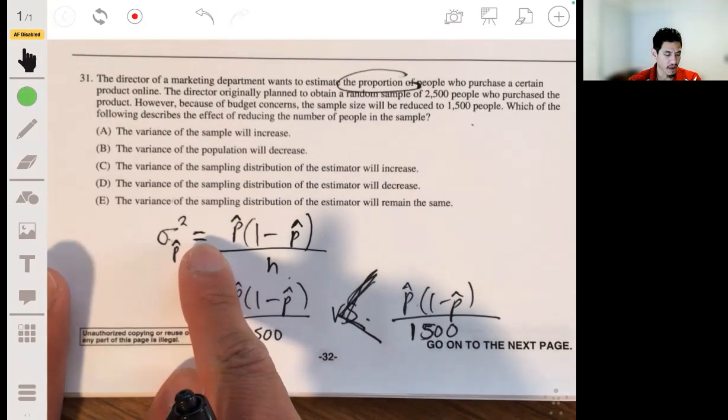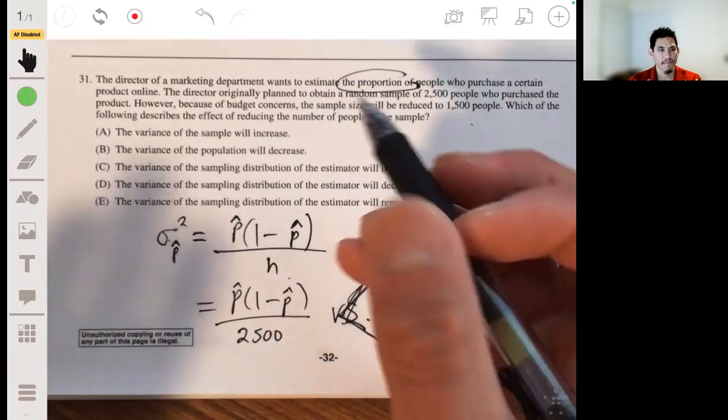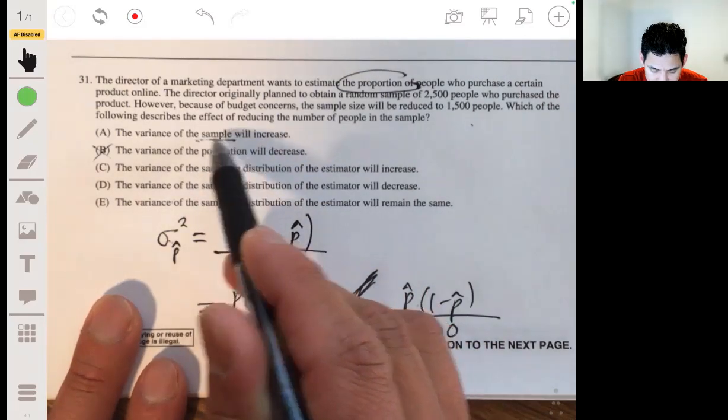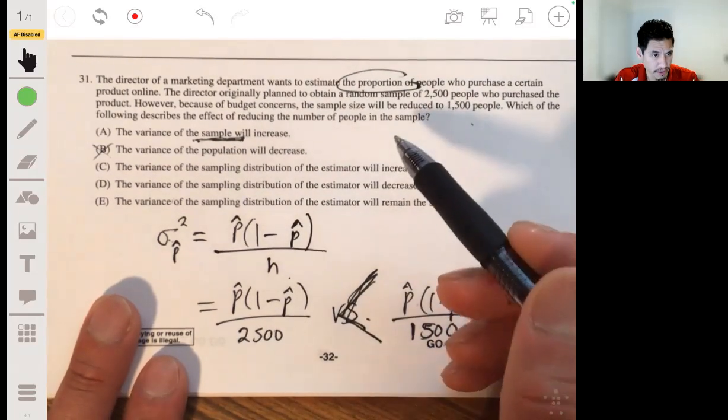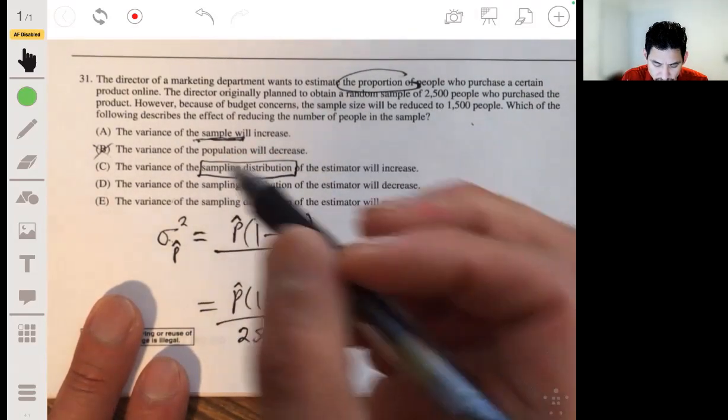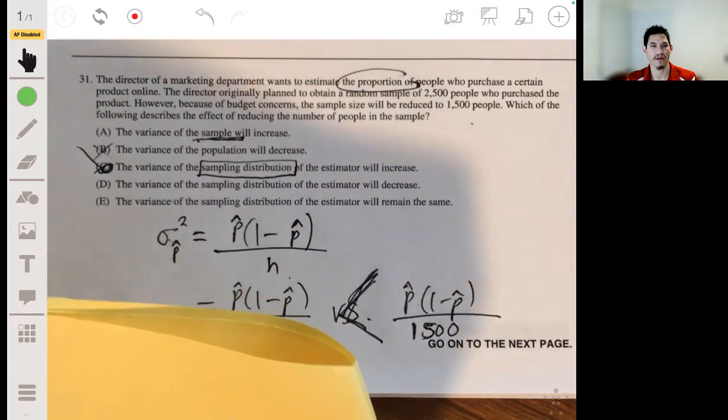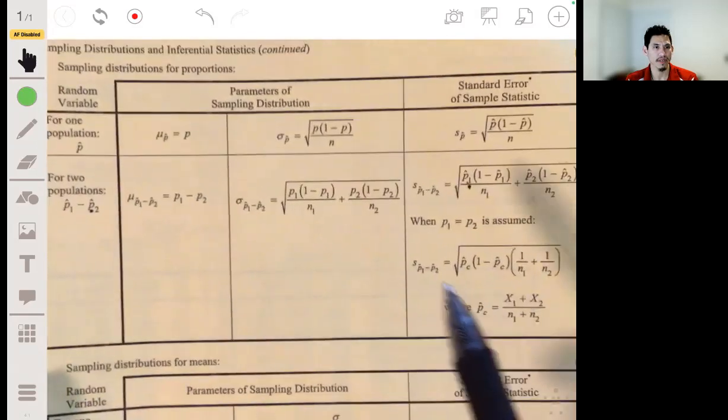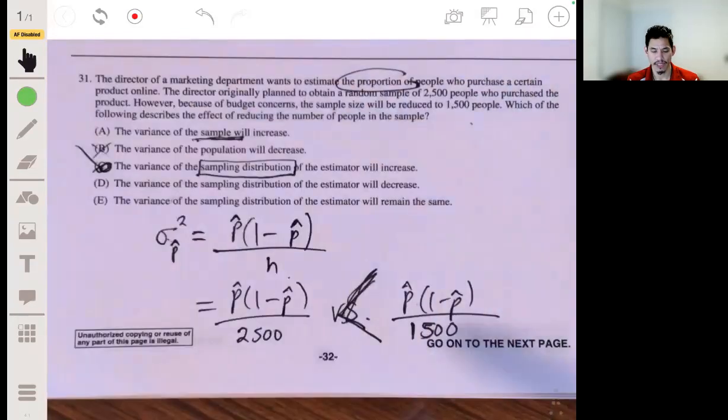The variance of, not the population, this is a sample, and we're looking at a sampling distribution. Remember each sample size has its own distribution. The variance of the sampling distribution will increase. This is going to deal with the stuff you cover like in a probability unit, probably chapter seven. The answer would be C.